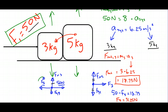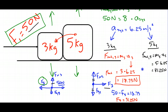Now let's check how much the 3 kilogram object exerts back on the 5. Since F3 is the only force causing the 5 kilogram object to accelerate, Fnet of 5 equals mass of 5 times acceleration of 5 — that's 5 times 6.25, or 31.25 newtons. So F3 equals 31.25 newtons. These two numbers are equal because they are Newton's third law pairs — the 3 pushes on the 5 with the same force that the 5 pushes on the 3.